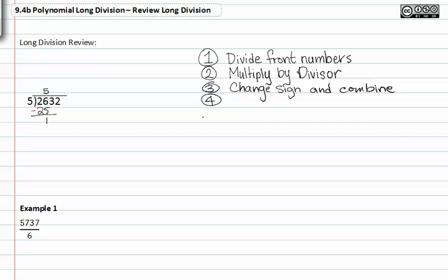Step four is to bring down the next number. In this case, bringing down the next number is three.